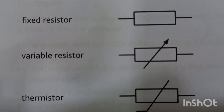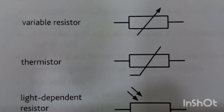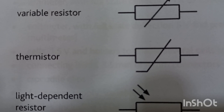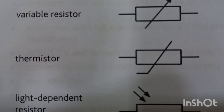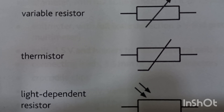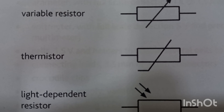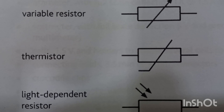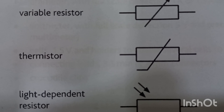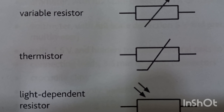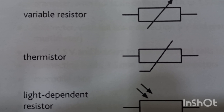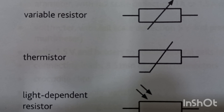A variable resistor is a resistor whose resistance you can change — you can make its resistance higher or lower. Then this is the symbol for the thermistor. A thermistor is a resistor whose resistance depends upon the temperature. If the temperature is higher, the resistance of the thermistor will be less, and if the temperature is lower, the resistance will be high.